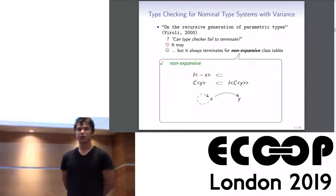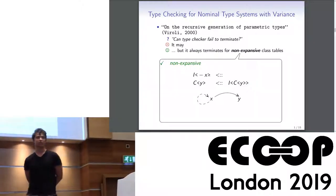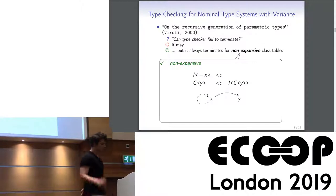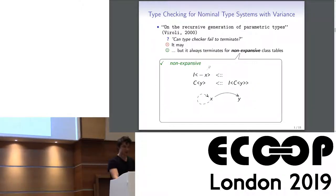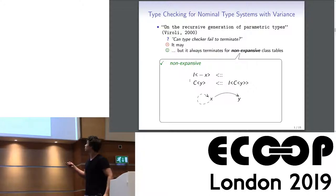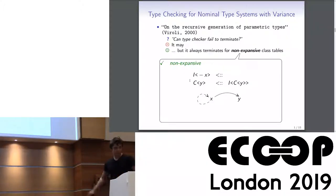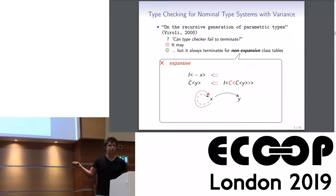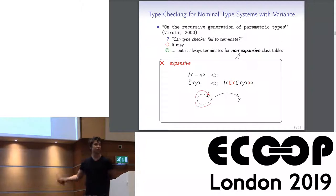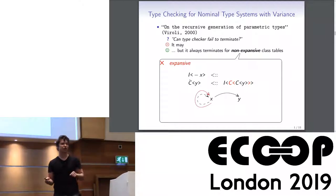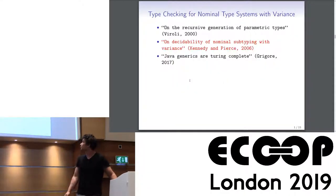His idea was to throw away class tables that have some form of cycles in the type variable dependency graph. To give some intuition: a class table is okay even if a type parameter C occurs on the right side, but if we add another occurrence of C in the middle, we can get into a situation where during type checking we encounter the same kind of type but the size has grown, eventually producing infinitely large types.